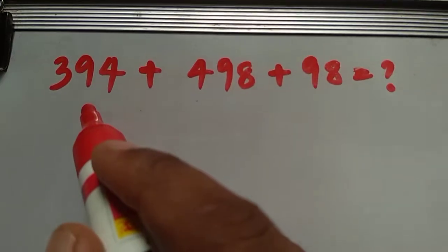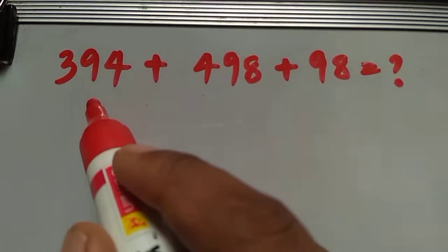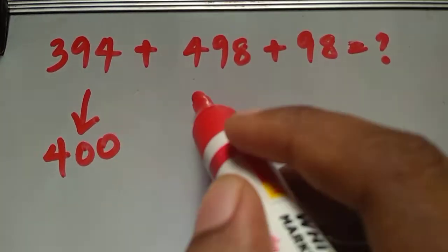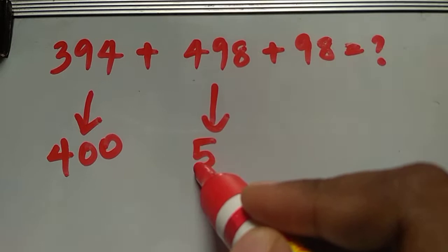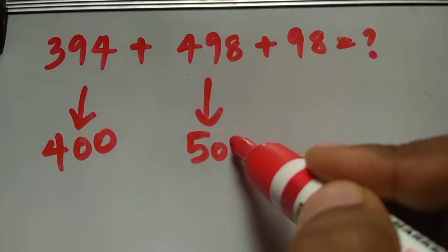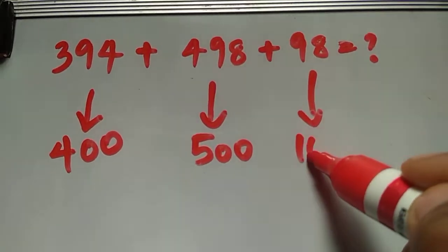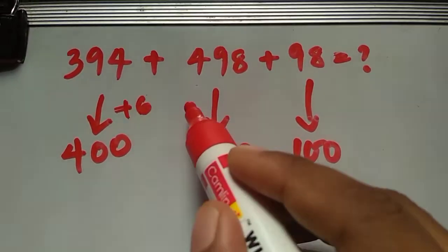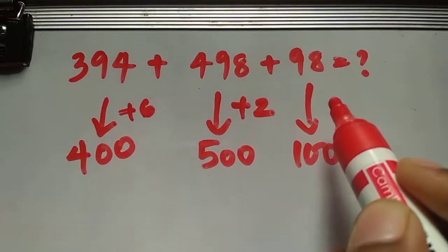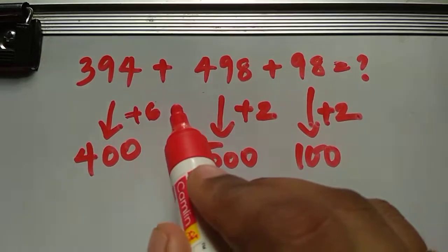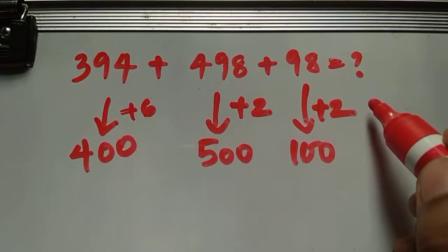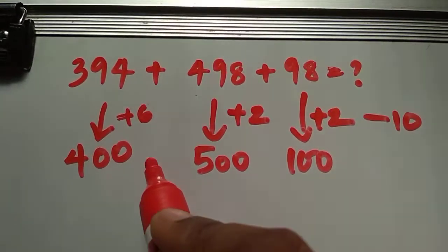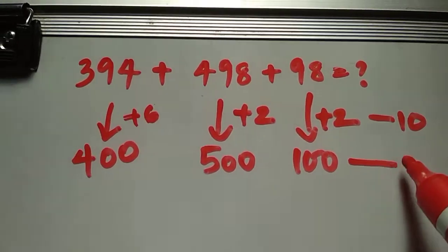Here we will round each number up to the nearest hundred. 394 we round off to 400, 498 to 500, and 98 to 100. We have added 6 here, 2 here, and 2 here — altogether we have added 10. The sum of these rounded numbers will be 1000.